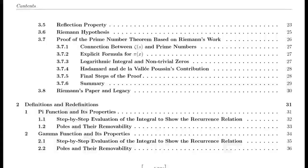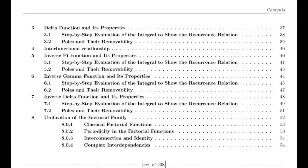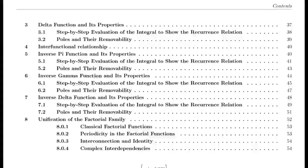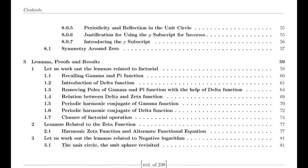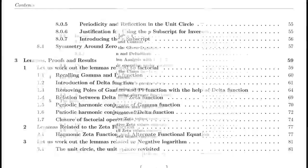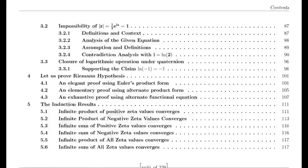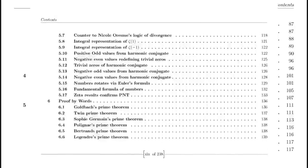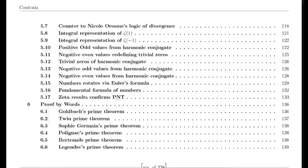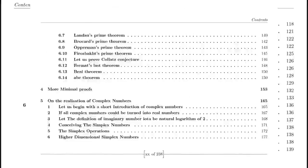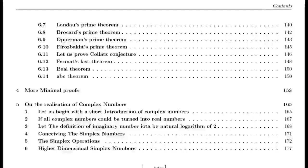As the century progressed, the zeta function found its way into various fields beyond pure mathematics — physics, probability theory, and even quantum mechanics. Its complex interplay with randomness and order sparked new insights and debates among scholars, revealing that the quest to understand prime numbers was not merely an academic pursuit but a journey into the very foundations of the universe. The questions raised by Riemann's conjectures echo through time, urging us to look deeper into the fabric of numbers, reminding us that some mysteries may never be fully unraveled, yet they drive us forward into the realms of discovery.